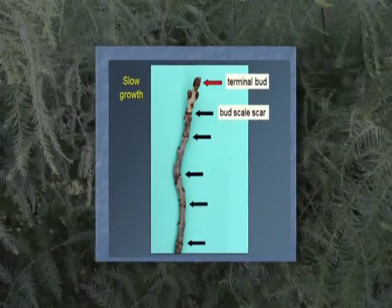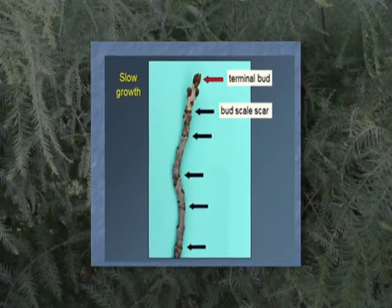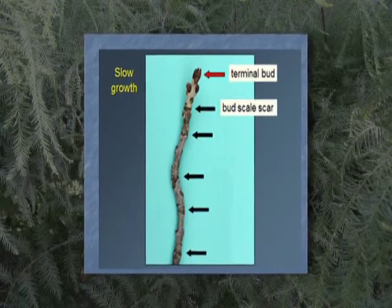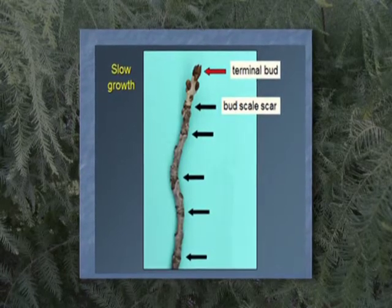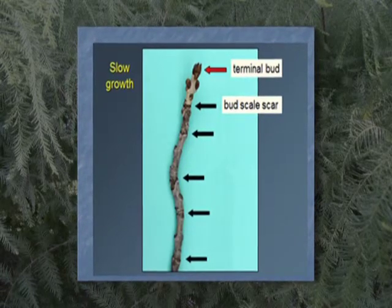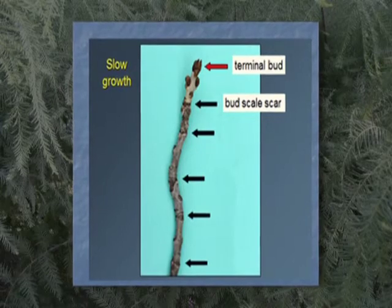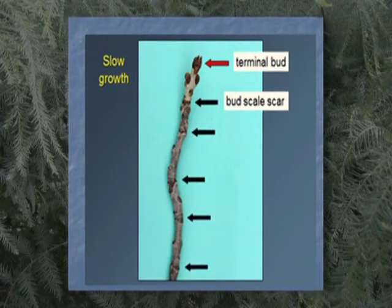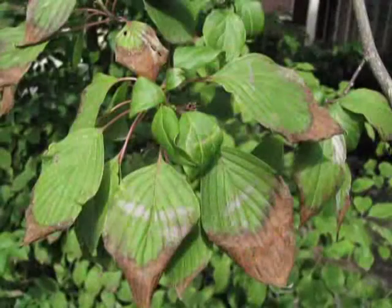A good way to determine if drought is a possible issue is to measure the growth rate of the tree over the past few months. Identify the bud scars to distinguish between years. If the tree puts on only a few inches of growth each year, or there is a reduction in the growth rate, then drought is a possible cause.